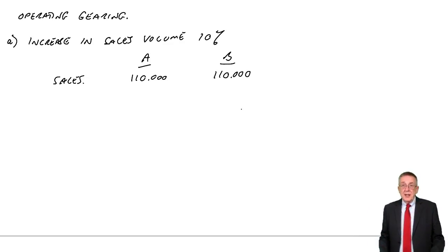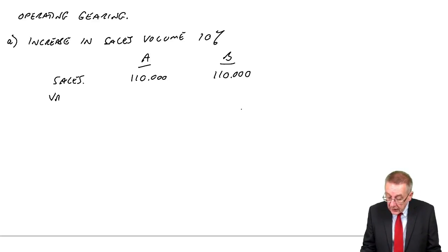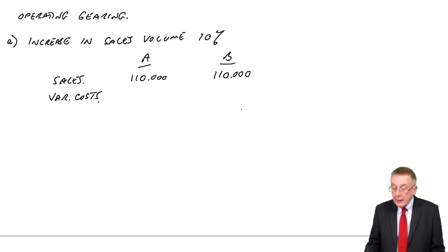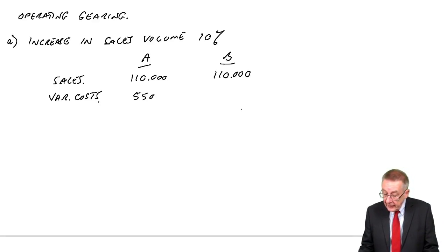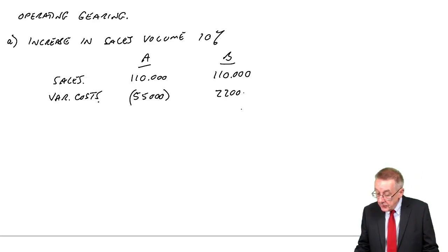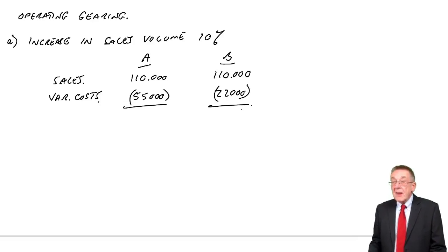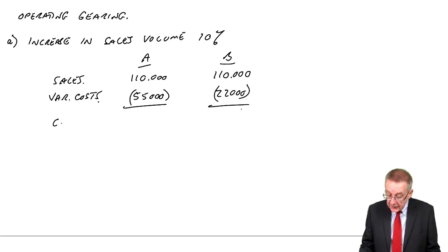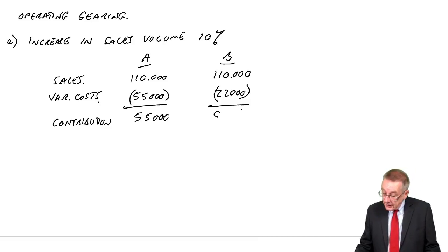If the sales volume goes up by 10%, it's currently 100,000, it'll go up to £110,000 in both cases. However, if the sales volume goes up, then surely we sell more so we have to produce more. If we produce more, the variable costs will go up as well by 10%, the extra volume. In the case of A, variable costs are currently 50, so if they go up 10%, they'll go up to 55. In the case of B, variable costs are currently 20, so they'll go up to 22.